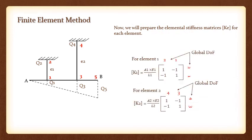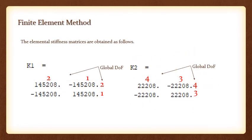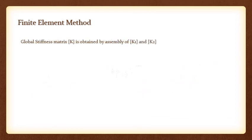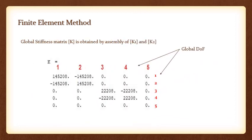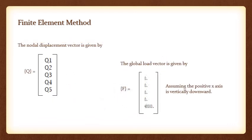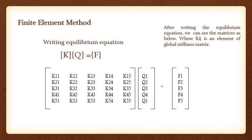The elemental stiffness matrices can be obtained easily. After assembly, the global stiffness matrix is obtained. Similarly, the global load vector is obtained. Thus, we can write the equilibrium equation in the form of a matrix.